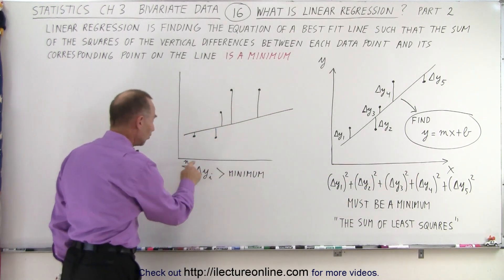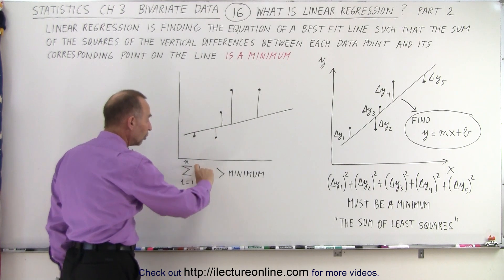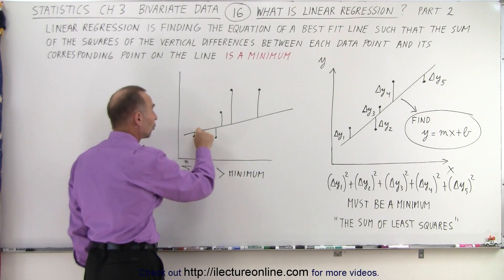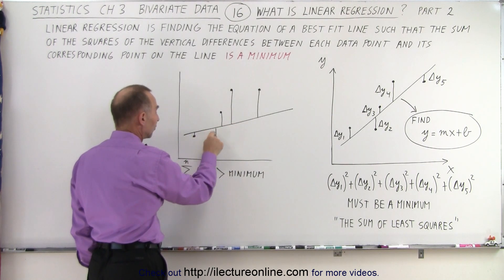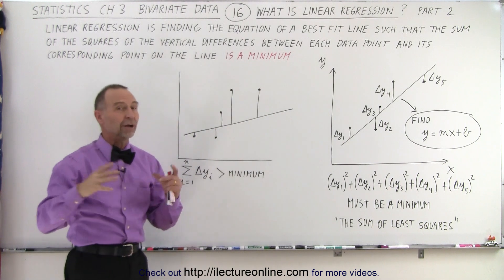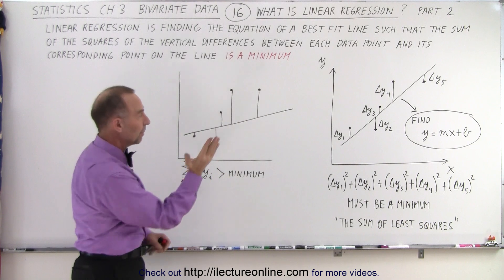We sum up from i equals one to n, n is the number of data points, all the differences in the y values between the data point and the corresponding points on the line. Yes, these are relatively small, but these are huge, and when we square them, we get very big values, and when we sum them all up, we don't get the minimum, we get something bigger than the minimum.